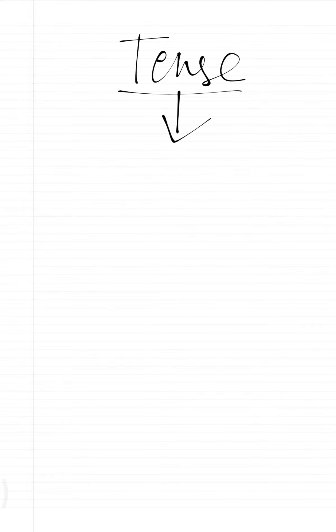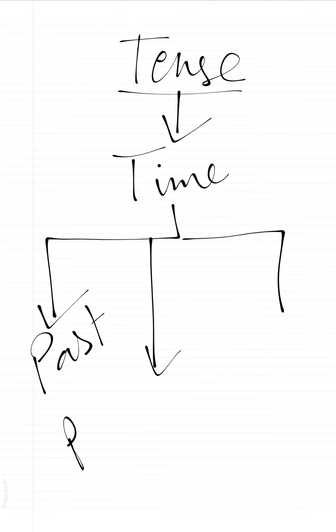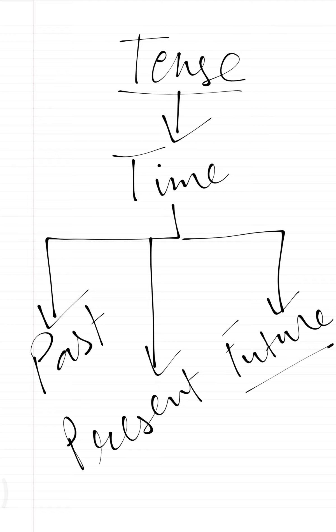Hello everyone. From Collins English Grammar and Composition book, we are going to cover the topic tense. Tense means time, and this time is divided into three: one is past tense, that means the time that has already passed; present tense, that means the moment right now; and future tense, the time yet to come.